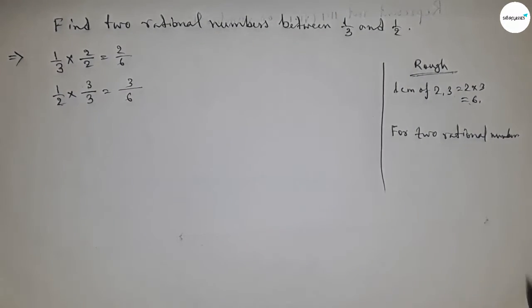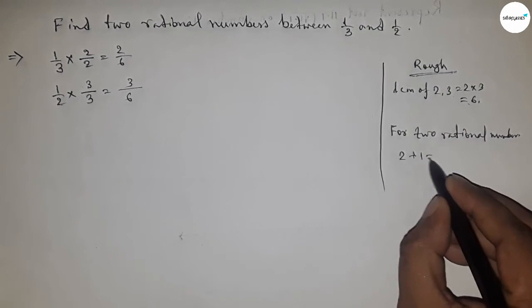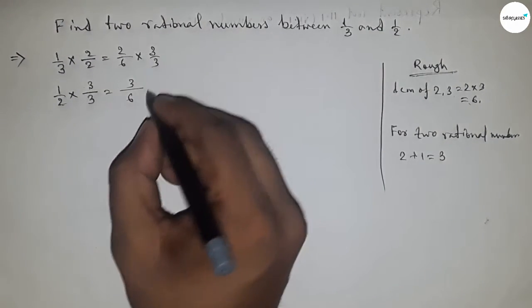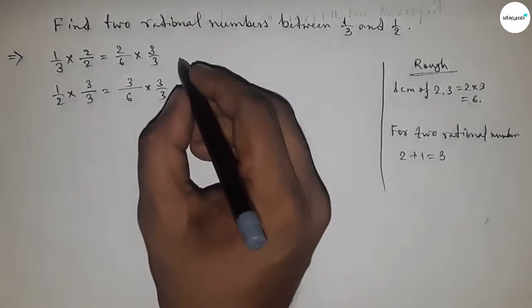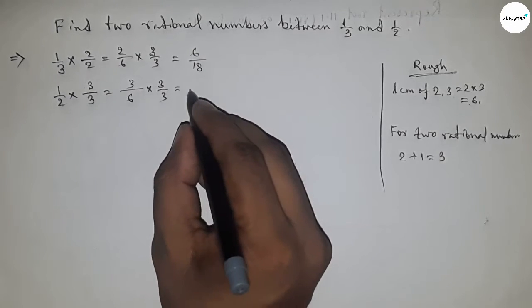rational numbers by 2 plus 1 equal to 3. So we here multiplying 3 by 3 and here 3 by 3, so this is 6 by 18 and this is